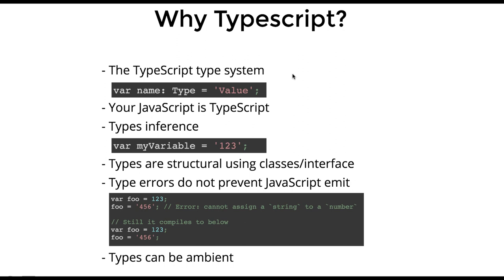In TypeScript we use interfaces and classes. For example, we create a variable foo as a number, then we try to assign a string to it — we get the error 'cannot assign a string to a number.' Earlier foo is a number, and if you then assign it to some number it still compiles fine, but if you assign a string it will not compile because you are violating the rule — foo is of type number, you cannot assign a string to it.